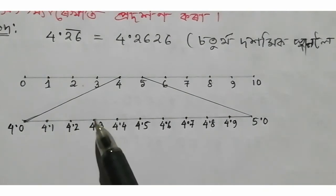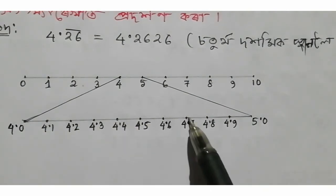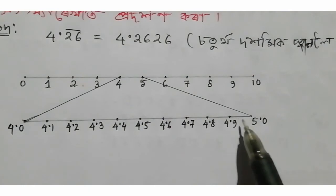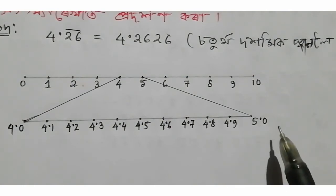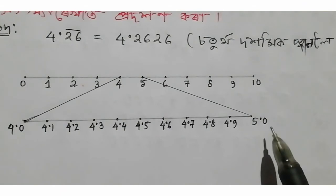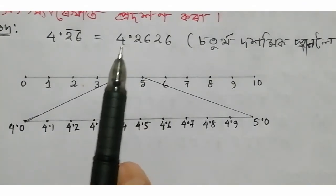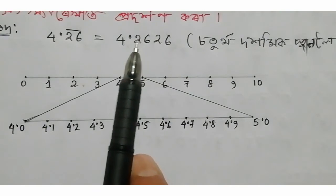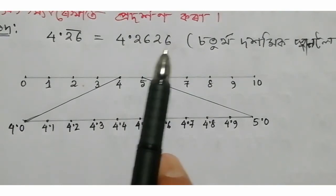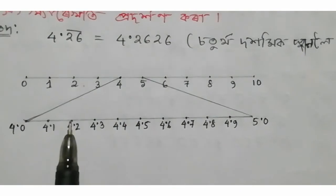On the number line: 4.2, 4.4, 4.6, 4.7, 4.8, 4.9, 4.10, 5.0. Then: 4.2, 4.7, 4.8, 4.9, 4.10, 5.0. Then: 4.2, 4.3, 4.5, 4.6, 4.8, 4.9, 4.10, 5.0. Then: 4.2 and 4.3, 4.1, 4.3, 5.0.